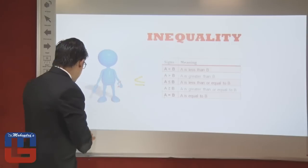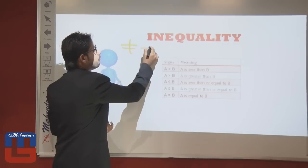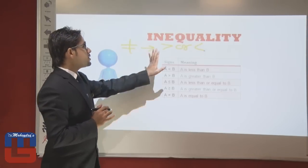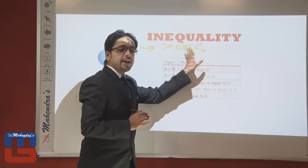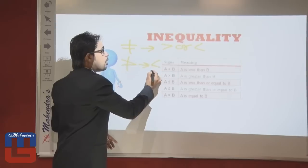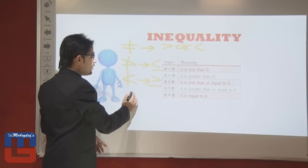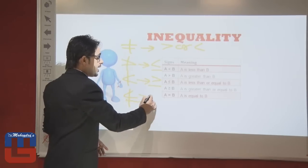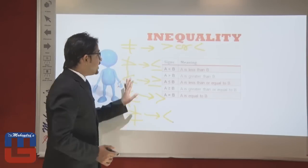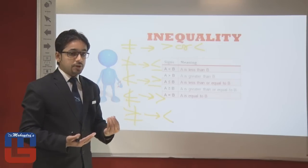Now some non-standard symbols: 'not equal' (≠) means either greater or smaller is true — we cannot say 100% greater or 100% smaller. 'Greater not' means smaller or equal. 'Smaller not' means greater or equal. 'Smaller equal not' means greater. 'Greater equal not' means smaller. These standard coded symbols can be asked in your upcoming examination, so be aware of them.